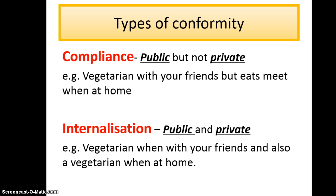When you look at compliance, you need to be sure that you're including the key words: public and private — and the same thing for internalisation. Compliance is where we change our behaviour when we're in front of other people, but when we're at home, we don't tend to do it. Internalisation — again, public and private — means you change your behaviour both publicly and when you're at home as well. Try and use examples when you're explaining the two types of conformity.